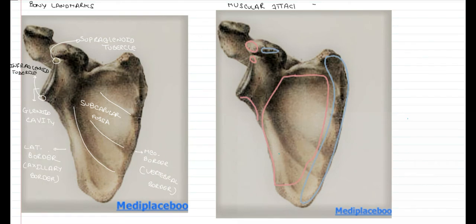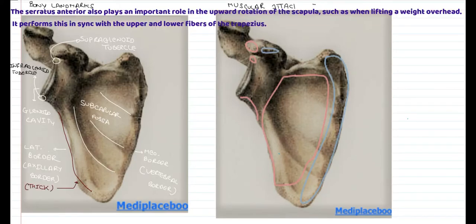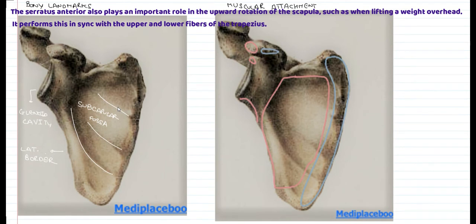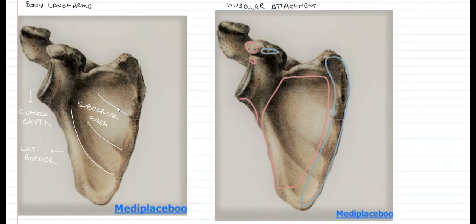The axillary border is thicker compared to the medial border and the superior border. The lateral border acts as a lever for the forward and backward movement produced by the serratus anterior muscle, which inserts on the medial border of the scapula.